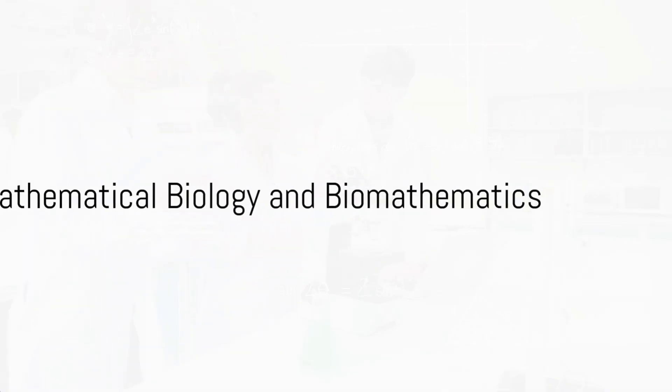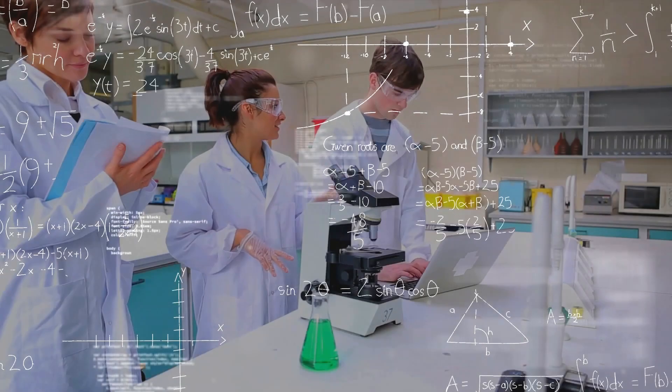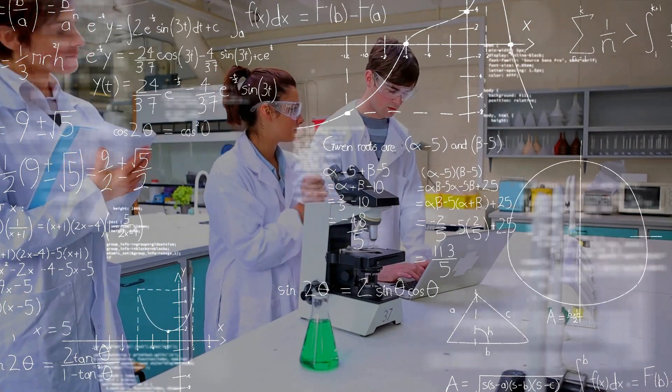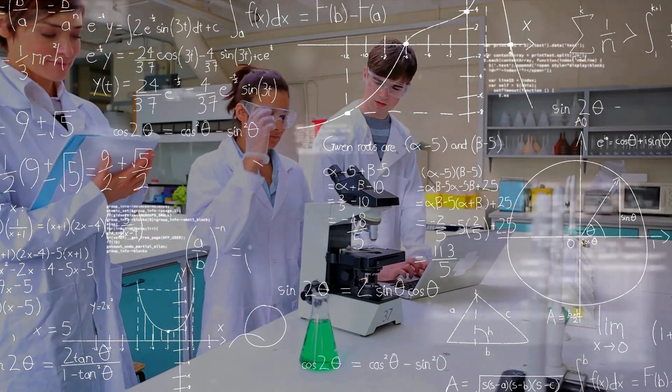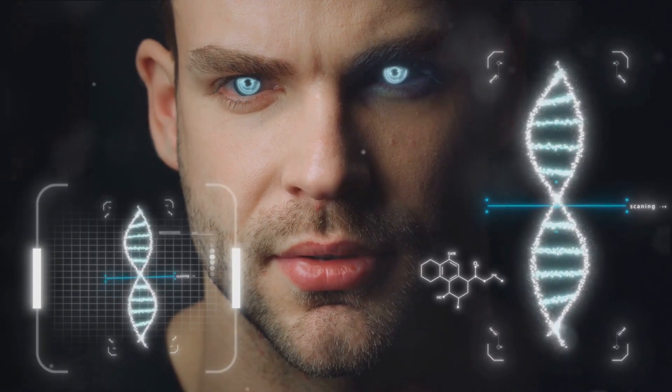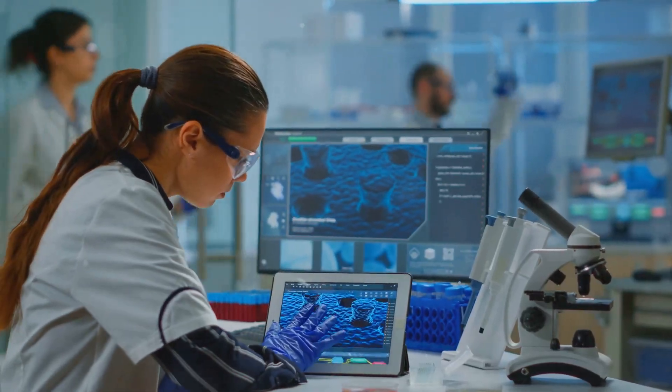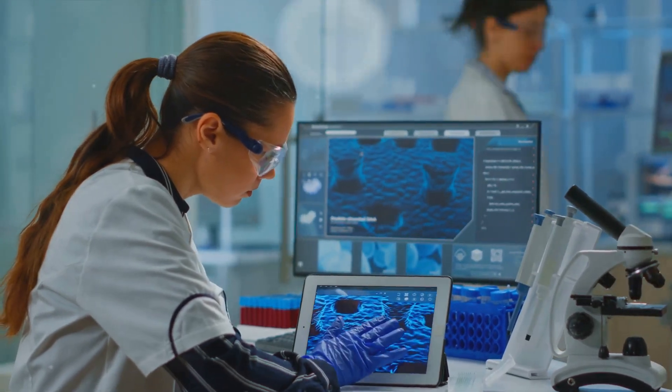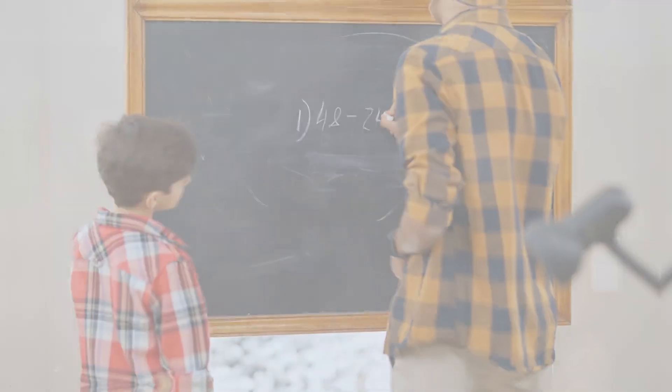The eighth topic, mathematical biology and biomathematics, analyzes the use of mathematical models and techniques in understanding biological systems. This topic shows how mathematics can help us understand complex biological phenomena, from population dynamics and epidemiology to genetics and evolutionary biology.